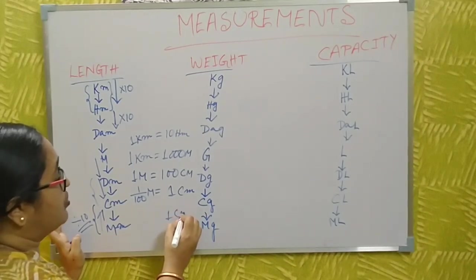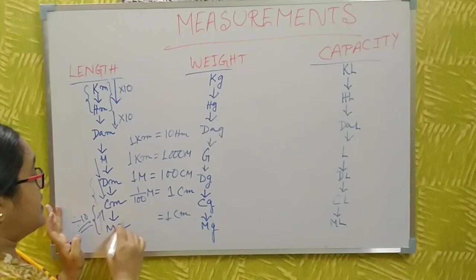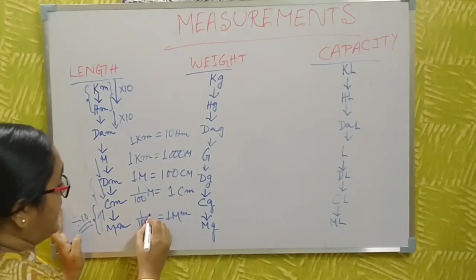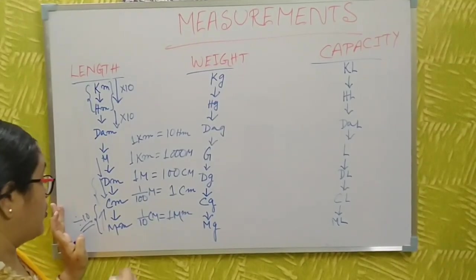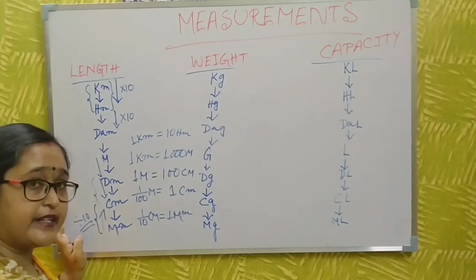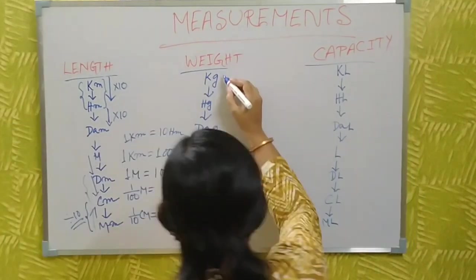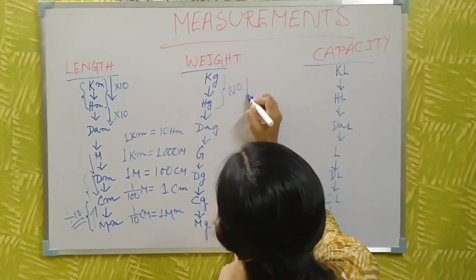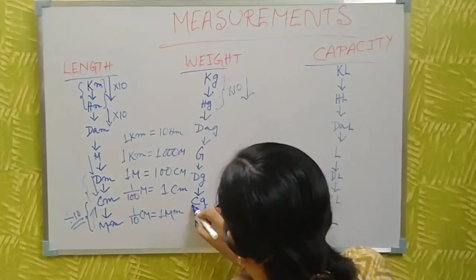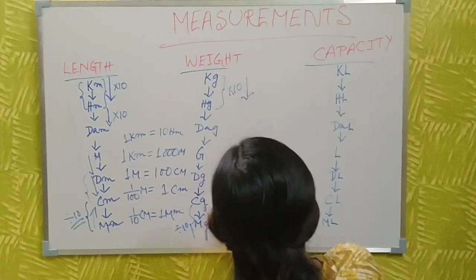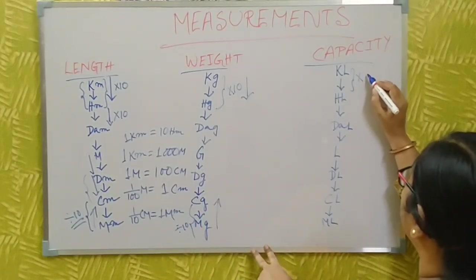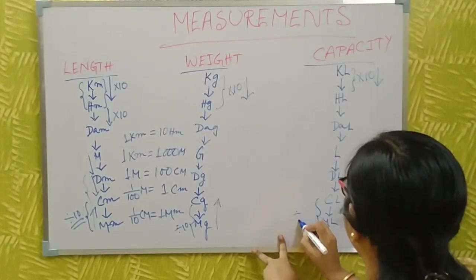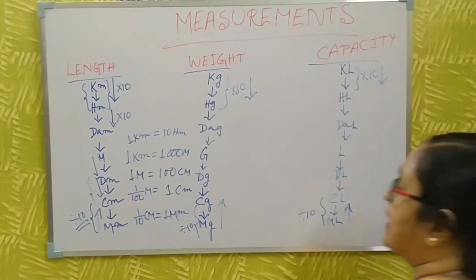If you go one step — for example, millimeter to centimeter — you divide by 10. Millimeter to centimeter: divide by 10. This same rule applies to all three measurements: one step down means multiply by 10, one step up means divide by 10.